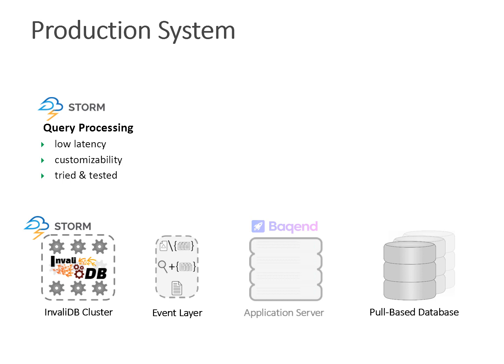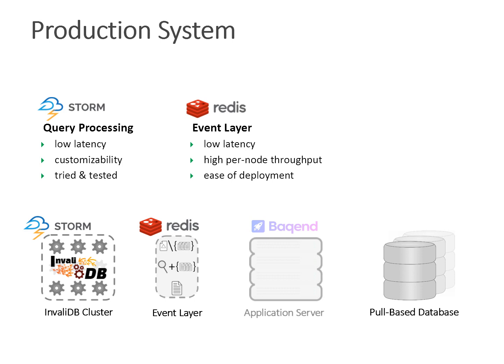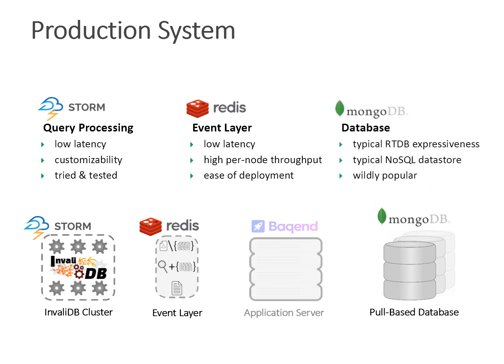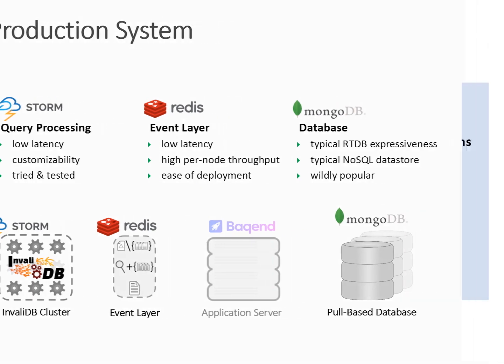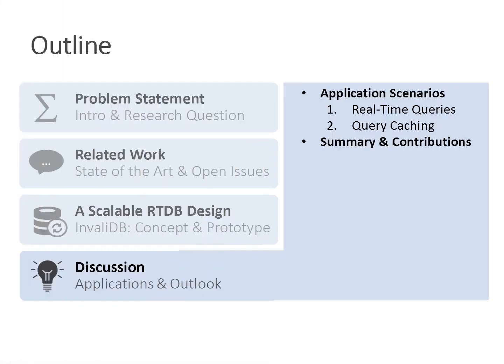We implemented InvalidDB at Backend using the distributed stream processing system Storm for the distributed query engine, chosen for its unmatched low latency. We use Redis for the event layer — for communication between the app server and the InvalidDB cluster — again for its low latency. We implemented everything with the MongoDB database because it is the database underneath Backend and because it is a very expressive NoSQL database well-suited for expressive real-time queries.